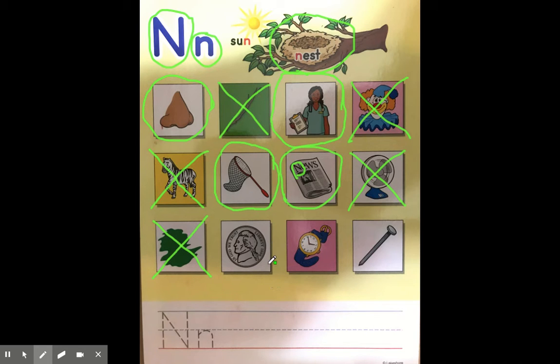Now we have a nickel. It's five cents. I'm going to put five cents on there. Nickel. Does nickels have the same beginning sound as nest? Yes. Nickel. And now we have a watch. Watch. Nest. Not a match. And we have a nail. Nail. Nest. Yes.